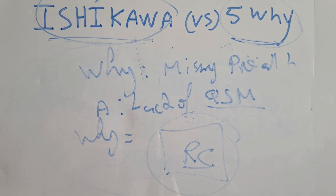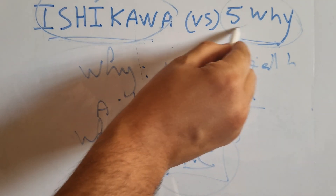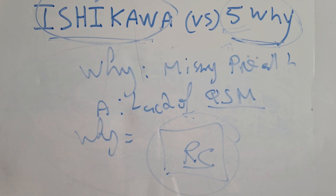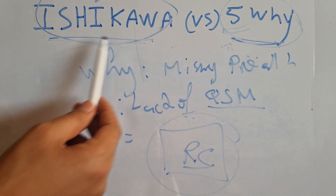You keep asking 'why' until you find exactly the root cause. The root cause is confirmed when: if you eliminate it, the problem disappears, and if you reintroduce it, the problem appears again. It is not exactly five times — you can ask fewer or more than five times. The purpose is to ask as many times as needed to find the true root cause. This is the link between both tools: Ishikawa is used first in the fourth step of the A8D report, and the 5 Whys cannot be used before Ishikawa.